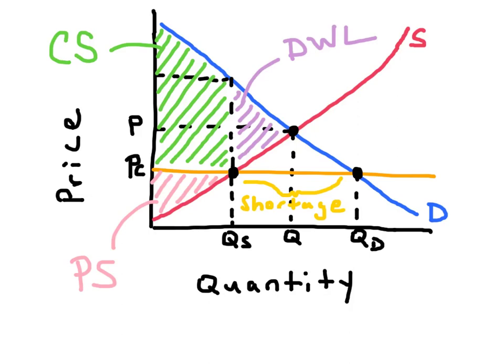Remember, a price ceiling is a legal maximum price. So in order for it to be effective, it has to be below the equilibrium price. If it's set above the equilibrium price, it would have no effect in the market — the market will just settle at the original equilibrium point. Price ceilings lead to shortages, a misallocation of resources, and a reduction in product quality, so generally they're pretty bad. They change consumer surplus, producer surplus, and cause dead weight loss.